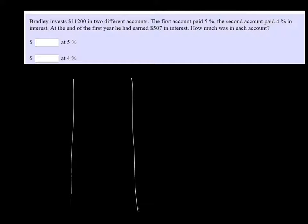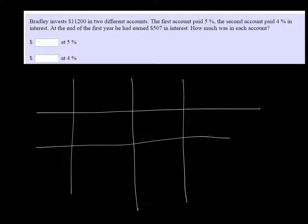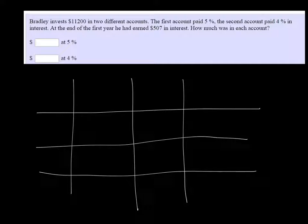So I'll make a table here. Usually 4x4 is good. We have the 5% account, and we have the 4% account.